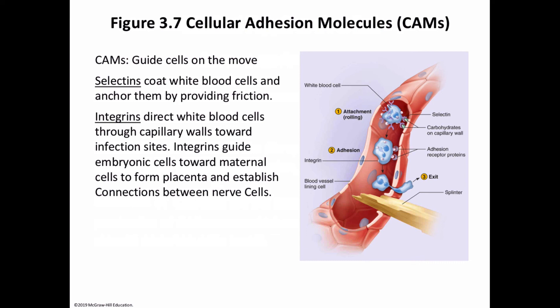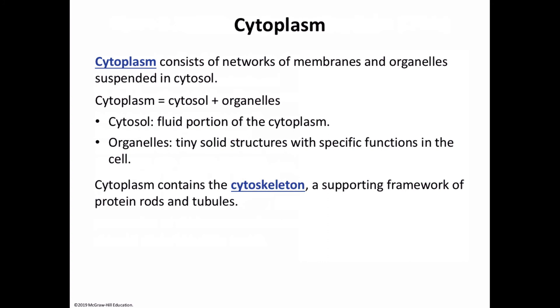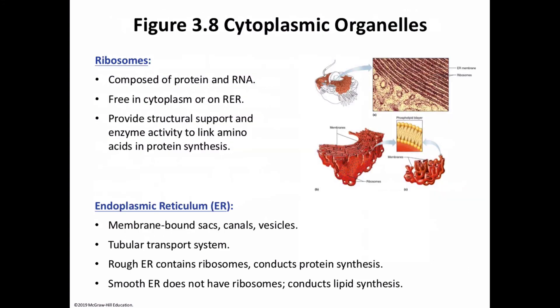Now I'll move on to the cytoplasm of cells. The cytoplasm is composed of the cytosol — the fluid-like portion — and those organelles. On your test two, you will list nine cell organelles and describe them in both structure and function, and also describe the ribosome in structure and function. I do not refer to the ribosome as being a cytoplasmic organelle.